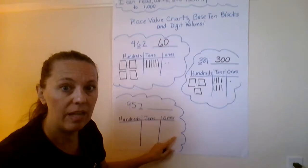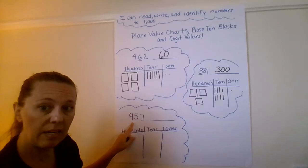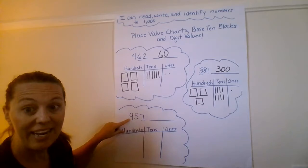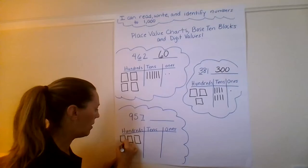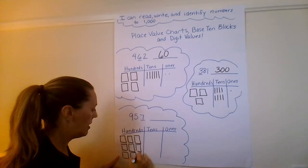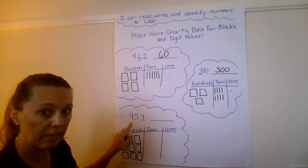Okay? Last example, and then we are gonna go get our assignment done today. I have the number 957. How many hundreds? Nine of them. Here we go. One, two, three, four, five, six, seven, eight, nine. Nine hundreds. I'm done with my hundreds place.